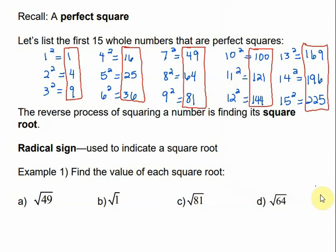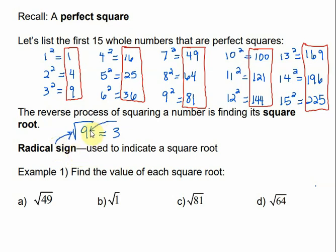So the reverse of squaring a number is finding its square root. When we find the square root of a number, we're asking ourselves what number did we multiply times itself to get that number? For example, what is the square root of 9? I'm saying, what number can I multiply times itself to get 9? And the answer would be 3. This symbol on the outside is called a radical sign, and the number under the radical sign is called the radicand.